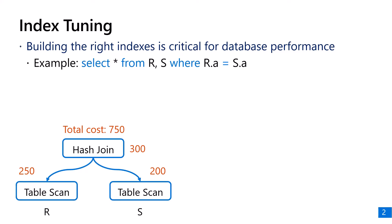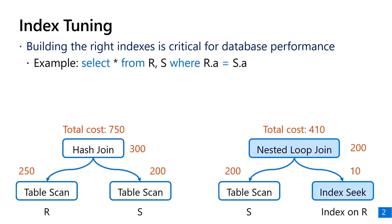The total cost of the query plan is 750. Now assume we create an index on table R. By using index seek and nested loop join, the cost of the plan reduces to 410.